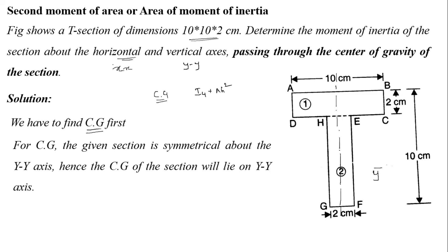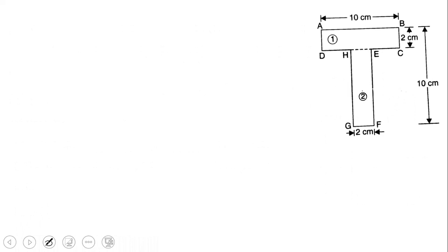First we find Y-bar, then calculate the moment of inertia. The given section is divided into two rectangles: ABCD (first rectangle) and EFGH (second rectangle). The formula for Y-bar is A1·Y1 plus A2·Y2 divided by A1 plus A2.